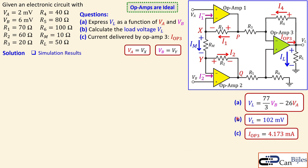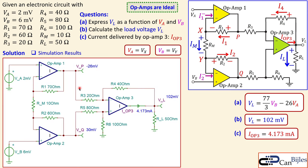Collecting all results: the expression for VL as a function of Va and Vb for question A, the numerical load voltage of 122 millivolts for question B, and the current of 4.173 milliamps for question C. The SPICE simulation confirms all of these — node Vp shows minus 26 millivolts, the load shows 102 millivolts, and the current is 4.173 milliamps, exactly matching our calculations.